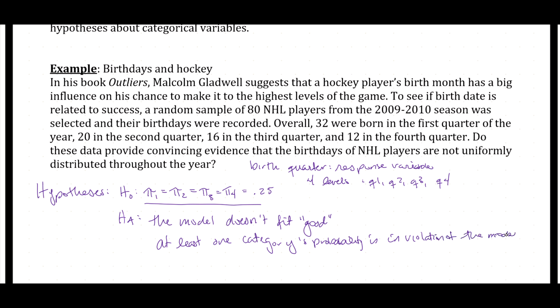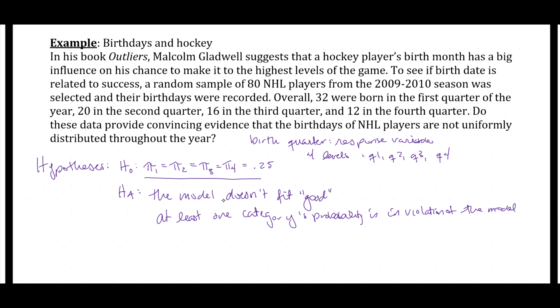This is similar to what we would do for one-way ANOVA and multiple regression. When we have multiple parameters specified in our null hypothesis, to make the null hypothesis incorrect, just one of those parameters has to be wrong. In this case, at least one of these PI's — at least one of these probabilities — has to be different than what the model specifies. At least one category is in violation or is different than what we have specified in the null hypothesis. So all of these probabilities don't have to be different than 0.25, just at least one of them does.